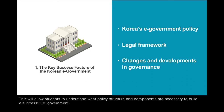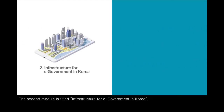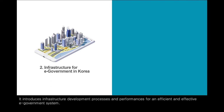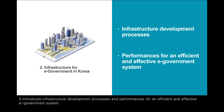This will allow students to understand what policy structure and components are necessary to build a successful e-government. The second module is titled Infrastructure for E-Government in Korea. It introduces infrastructure development processes and performances for an efficient and effective e-government system.